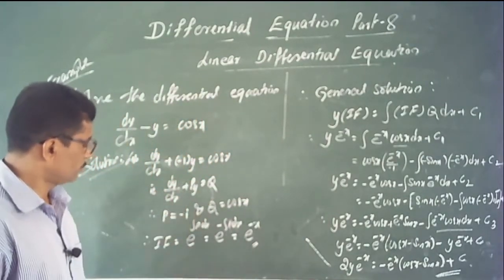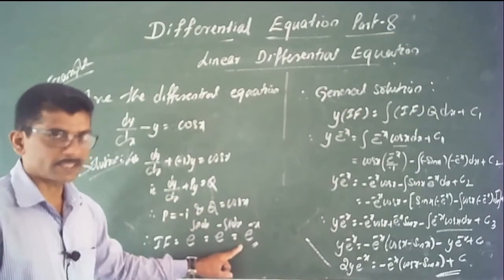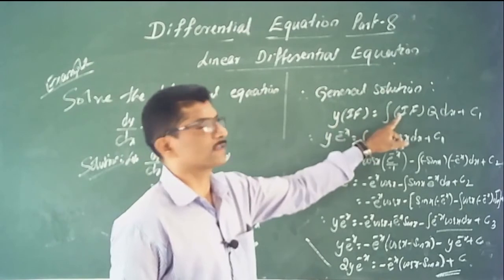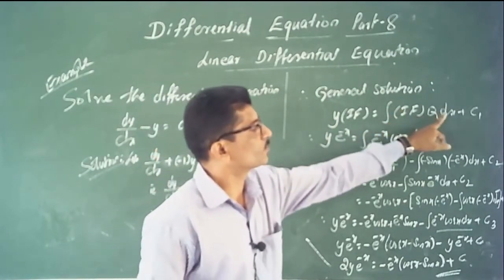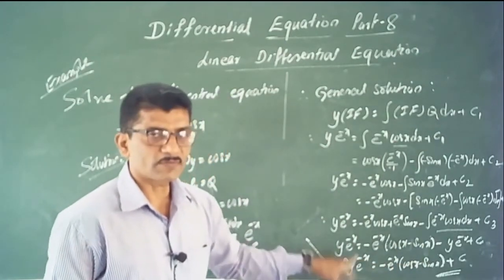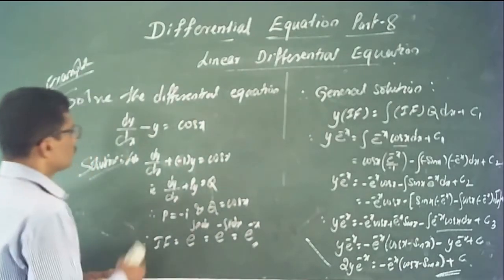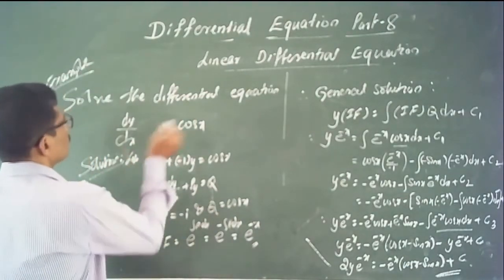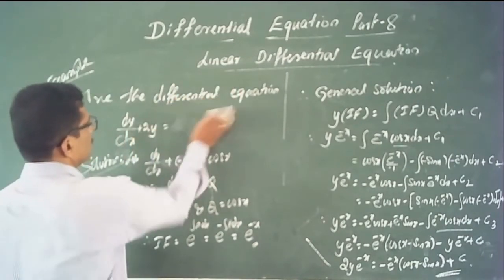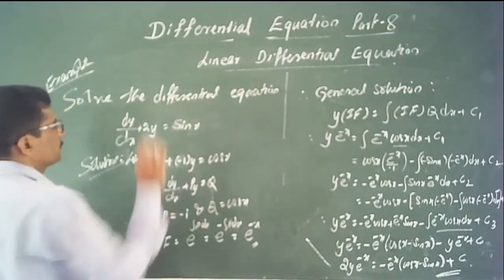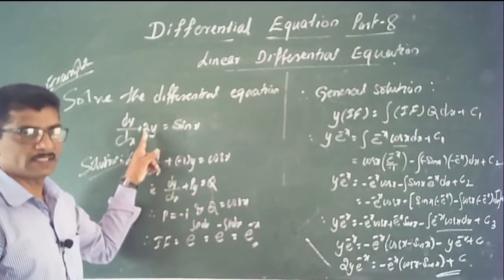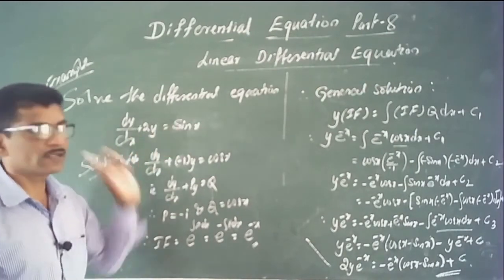Summary of steps: first identify P and Q, then find the integrating factor, then write the general solution y × I.F. = ∫(I.F. × Q) dx, and integrate the right-hand side to get the general solution. One more similar type question: solve dy/dx + 2y = sin x.